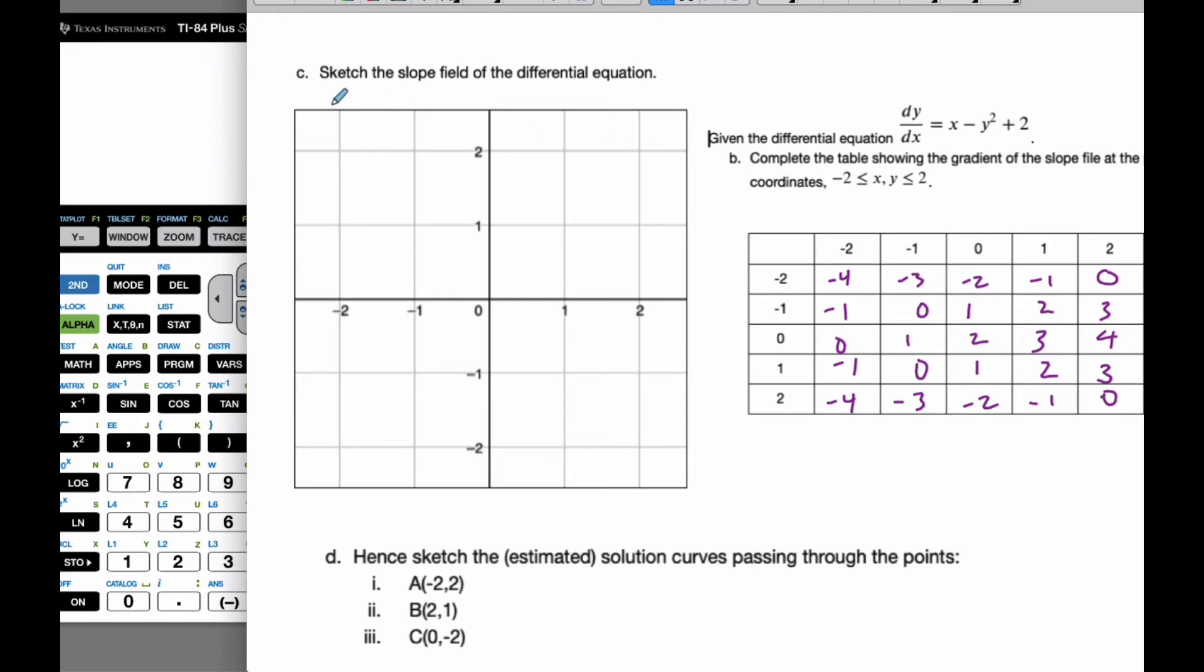Okay. So now that we have our table created, we take these values and we transfer them over to the graph. Remembering this is the x value and this is the y value in this case, the way I've set it up. And so I know for the x value of negative 2, the y value is negative 2. I have a slope of negative 4.